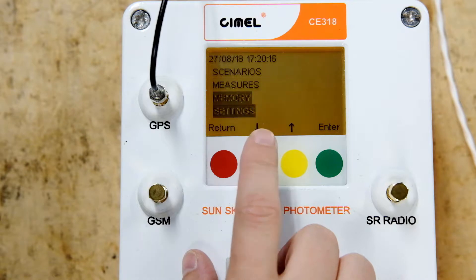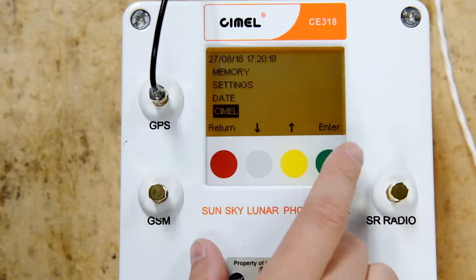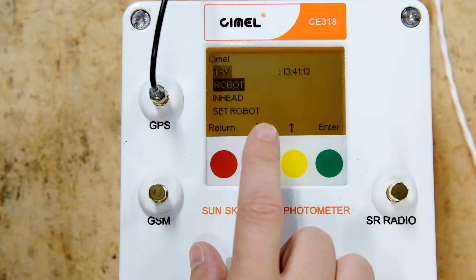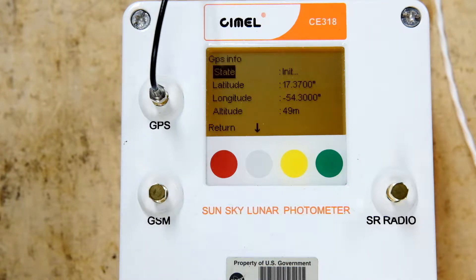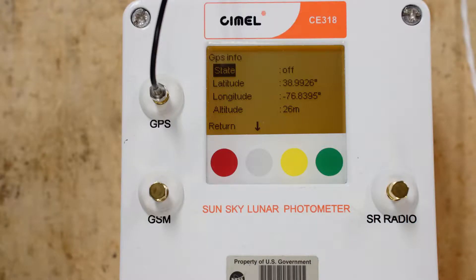Now that the instrument is powered on, we'll update the time and location. Go to the CML menu, then scroll down to GPS info. Press enter, then wait three to five minutes while the GPS antenna gets a lock. Once the time and location have successfully updated, state will change from wait GPS to off.